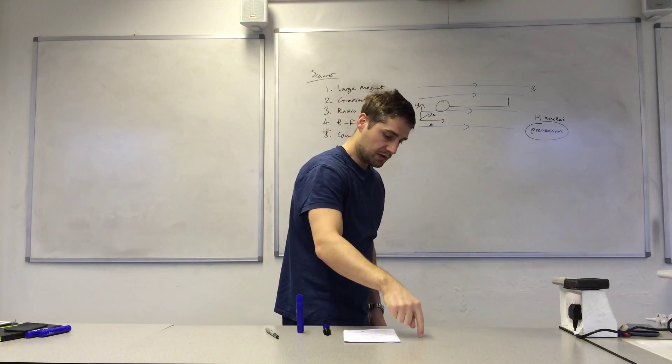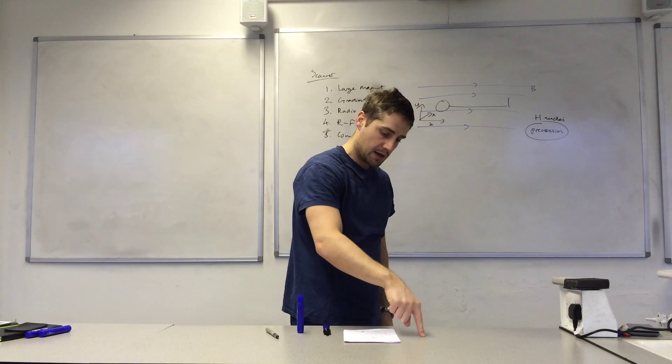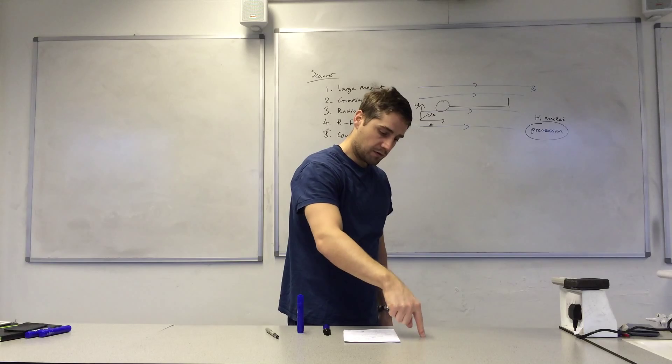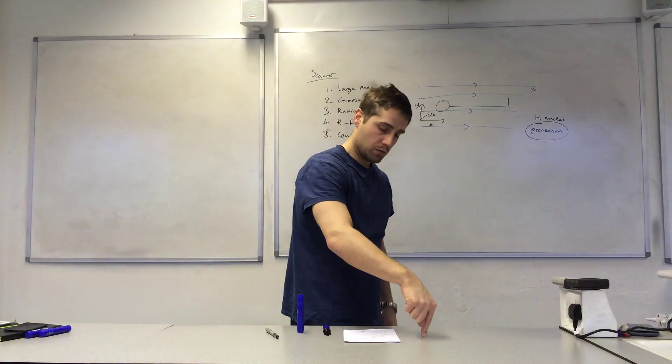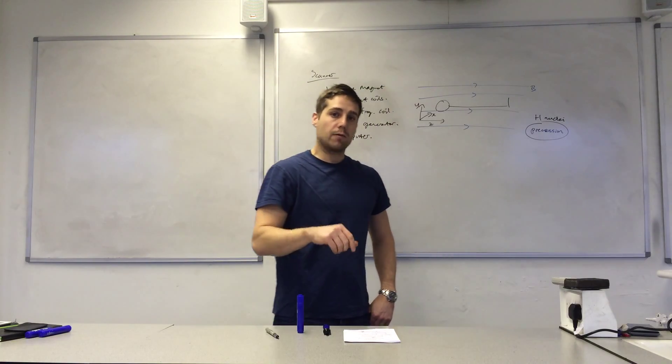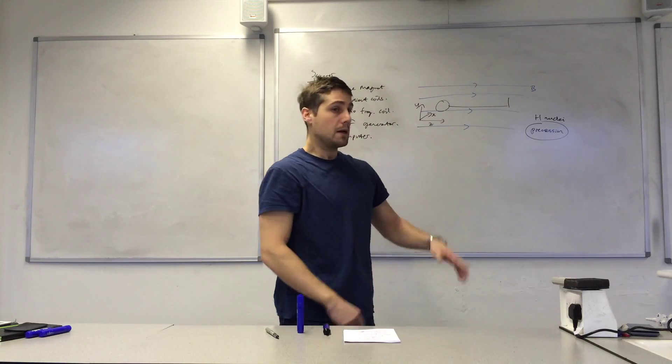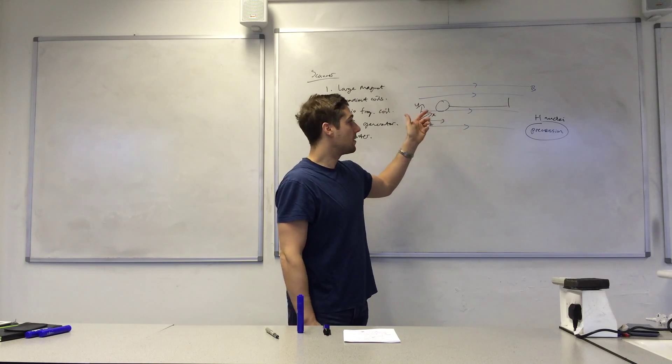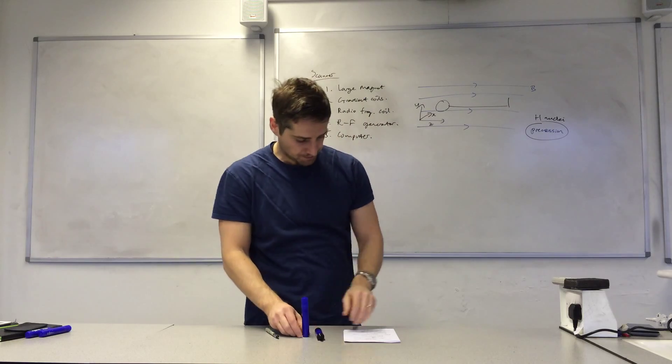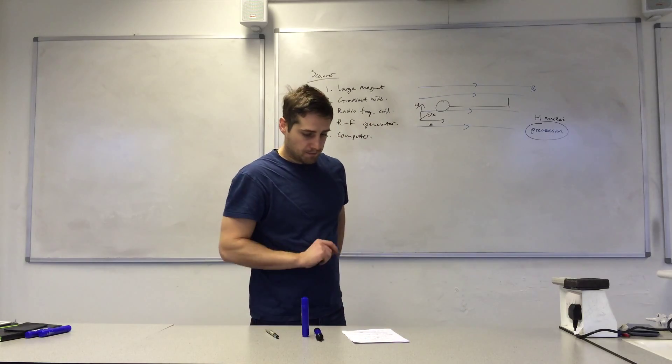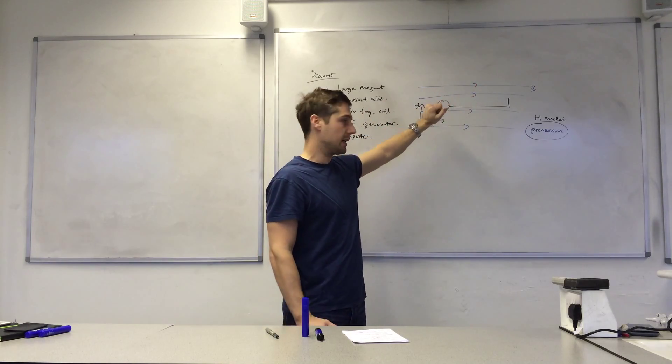If I had a spinning top that was spinning on this table, then it would precess because the axle of the spinning top will rotate in a conical fashion. And it would do that around gravitational field lines. So the gravitational field lines are vertical when it's precessing around them. The hydrogen nuclei will do that around magnetic field lines because they have a magnetic property.